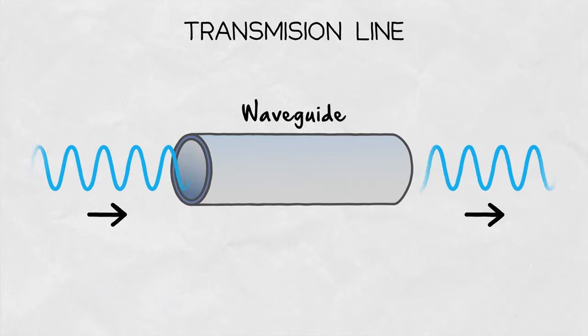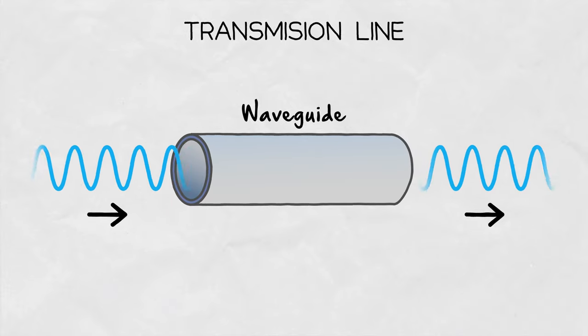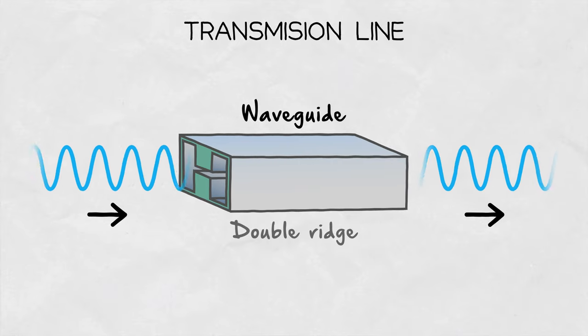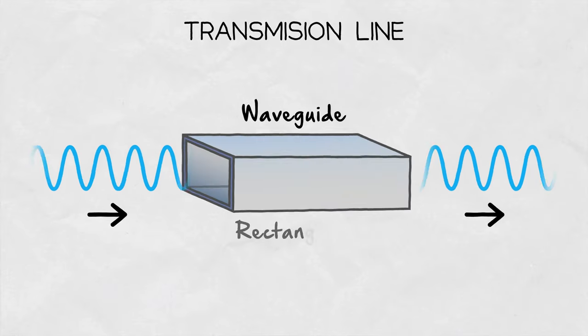Essentially, a waveguide is a hollow metallic tube that can have various shapes. The most common ones are circular, single ridge, double ridge, elliptical, or rectangular.